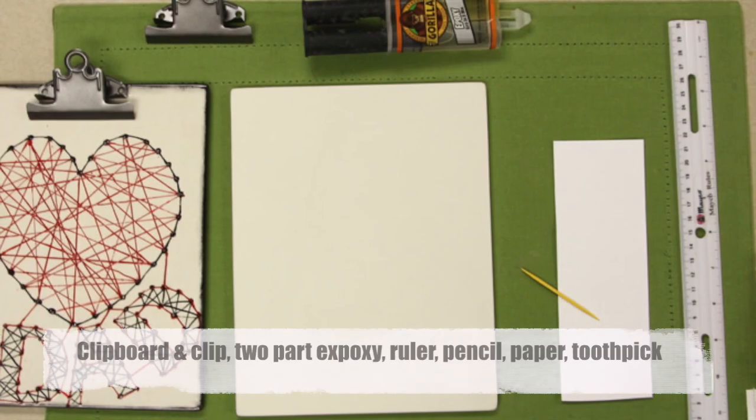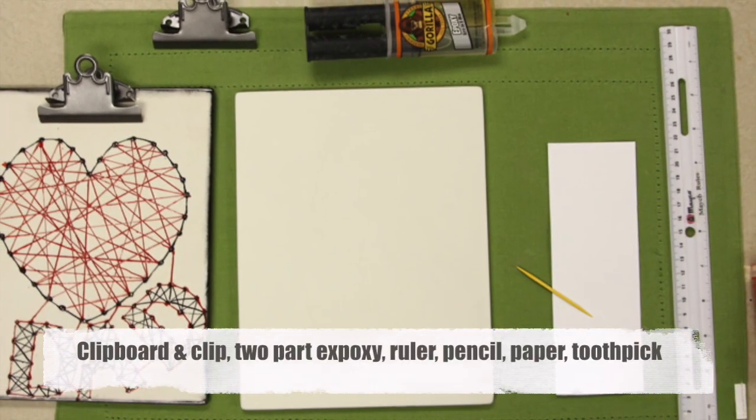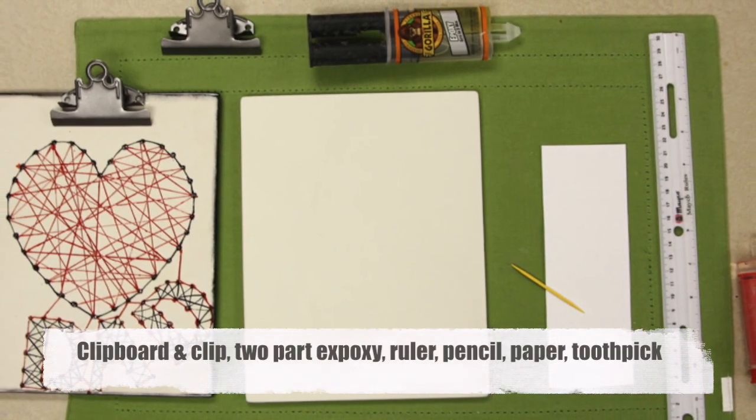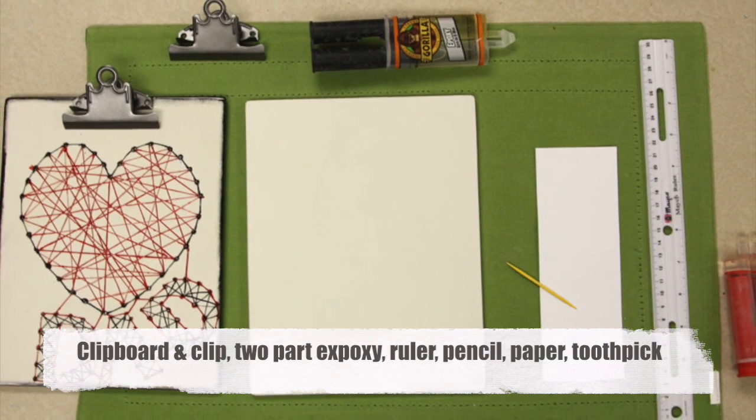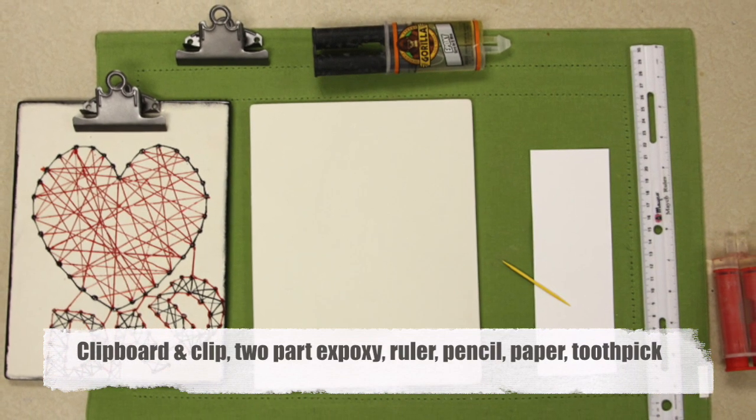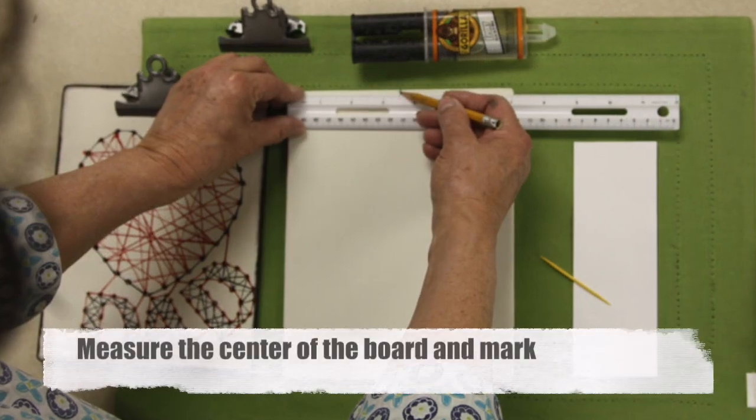For this project, you're going to need the MB-1461 clay clipboard, and the clip is included. A ruler, pencil, paper, toothpick or stir stick, and two-part epoxy that you can find at your local hardware store.